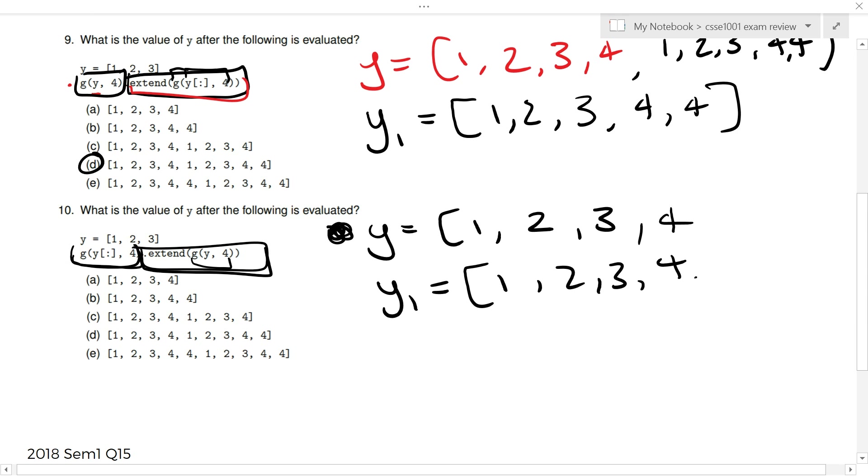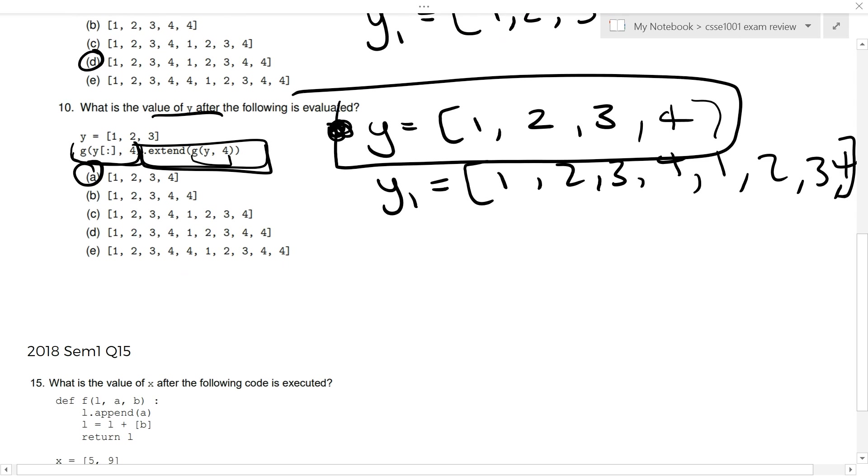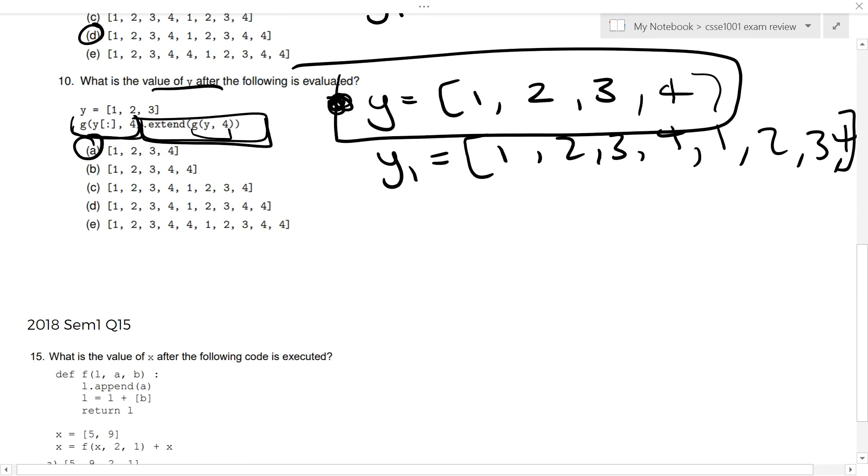So, y1 dot extend. 1, 2, 3, 4. I'm running out of space. So, you may immediately go, cool. C is the answer. But, actually, if you read the question. Yes, the end output is 1, 2, 3, 4, 1, 2, 3, 4. But, what is the value of y after? So, if you print out y, you will print out 1, 2, 3, 4. The answer is A. Read what the question is saying. Read what code you're given.